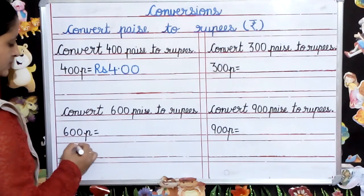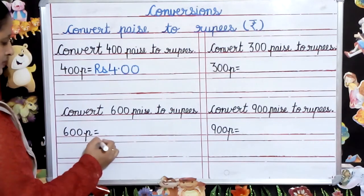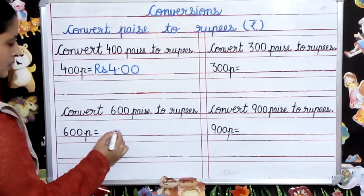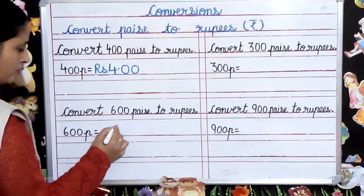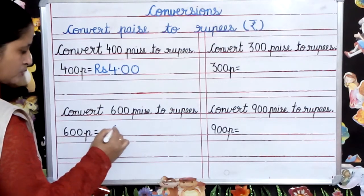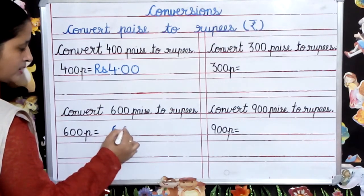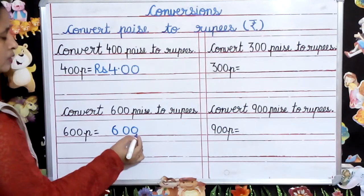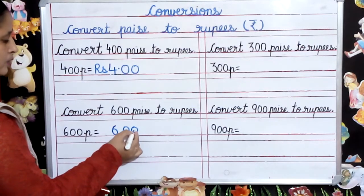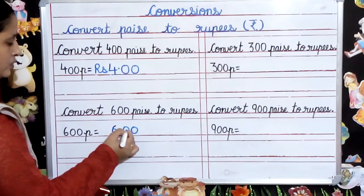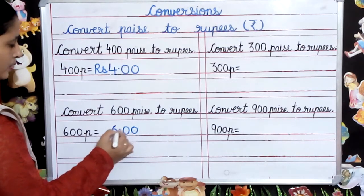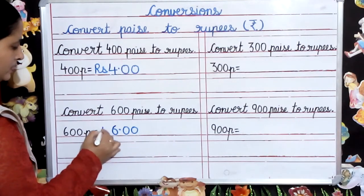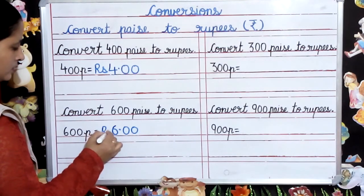For converting 600 paise to rupees, first we are going to write 600, then we will count 2 digits from the right — 1, 2 — and put a point, and write rupees in the beginning.